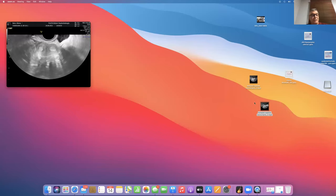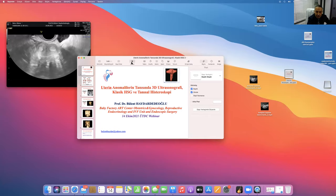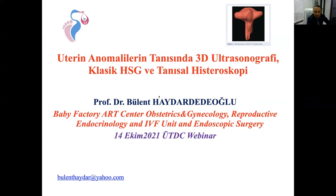Gamze Hoca'ya teşekkür ediyoruz. Şimdi Prof. Dr. Bülent Haydar Dedeoğlu uterin anomalilerin tanısal yöntemlerini görsel olarak karşılaştıracak. Ben genellikle rutin pratiğimde ESHRe klasifikasyonunu ciddiye alıyorum. T-shaped kavite dünyanın her yerinde görülebiliyor; Amerika'ya özgü değil. ASRM'nin 1988 klasifikasyonu günden birisi kaldı; ben yeni klasifikasyonu kullanıyorum. Önce normali tanımamız gerekiyor: normal uterus üçgen şeklinde olacak. Bu normali HSG'de ve 3D'de tanıdığımda seviniyorum.